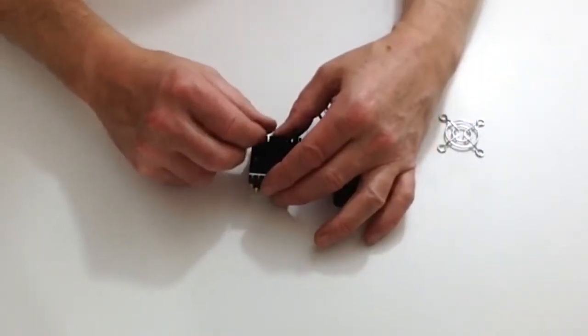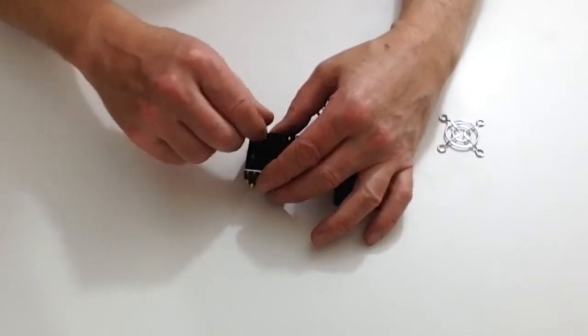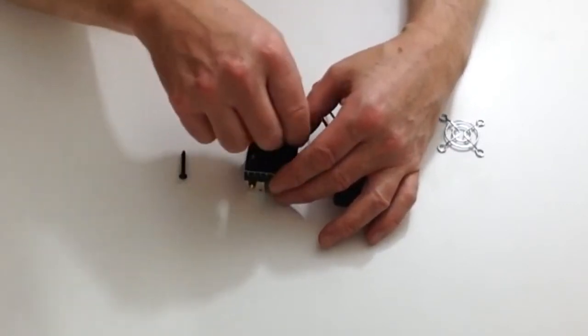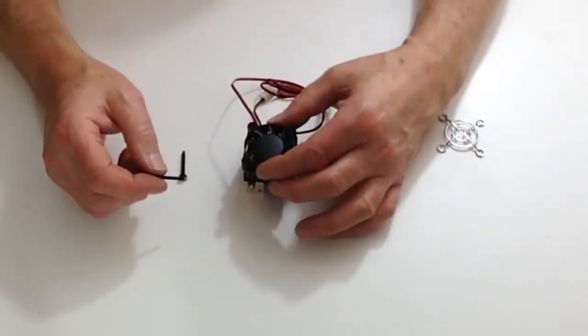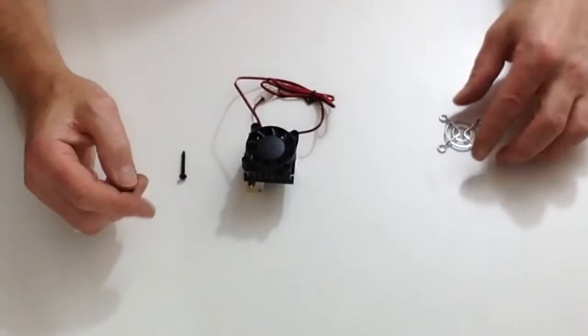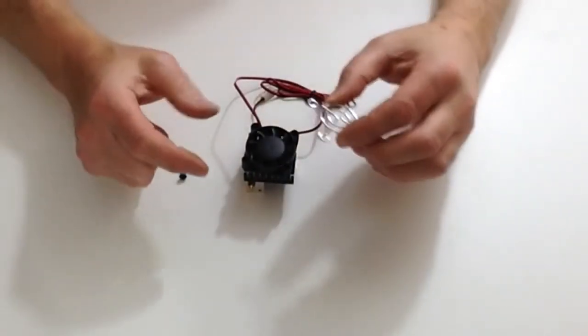Carefully remove the two screws that we have just lined up the heat sink with, and then place the fan over the top and take the guard.